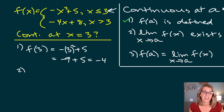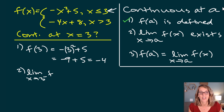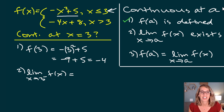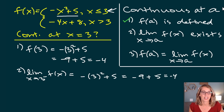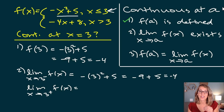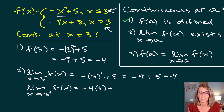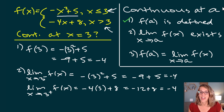Step two: we check the limit from both sides. From the left, we use the first piece: the limit as x approaches 3 from the left of -x² + 5, which gives -9 + 5 = -4. From the right, we use the second piece: the limit as x approaches 3 from the right of -4x + 8, giving -4(3) + 8 = -12 + 8 = -4. Both one-sided limits equal -4, so the limit exists — condition two is satisfied.